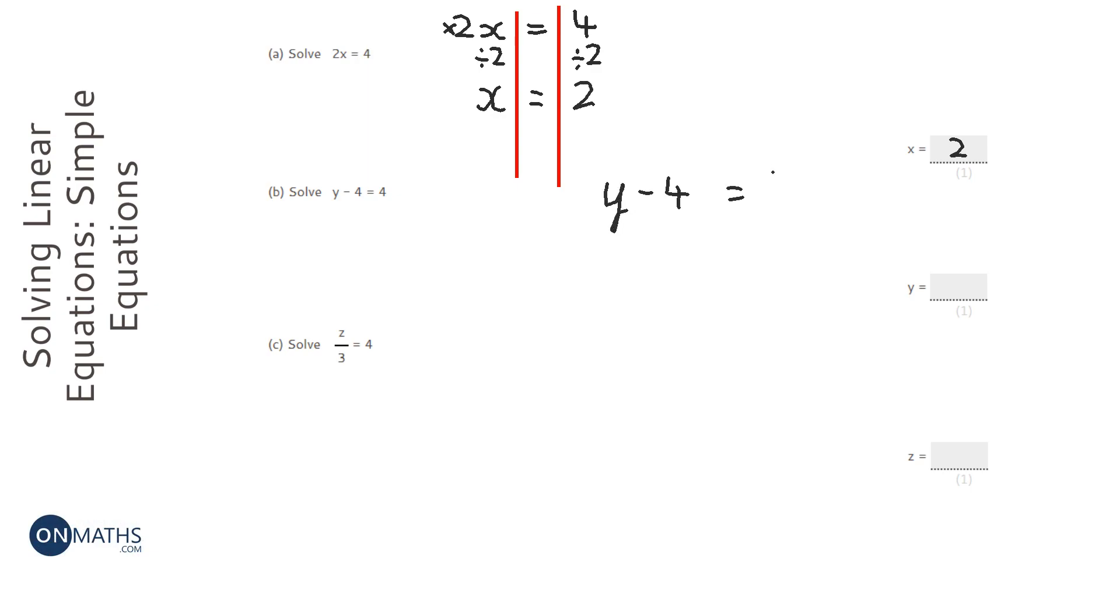For the next one, we've got y minus four equals four. We're going to get our lines down. Okay, so the bit we want to get rid of is this minus four bit.